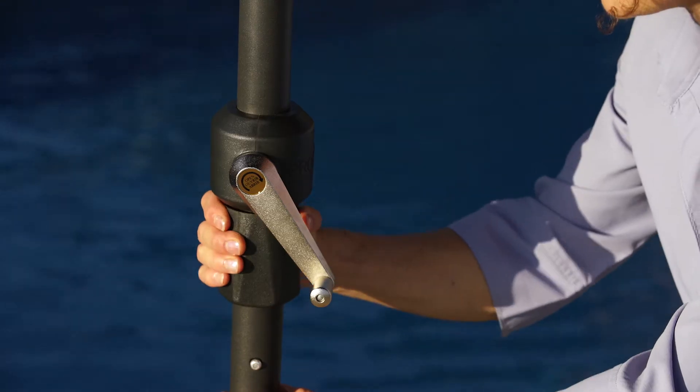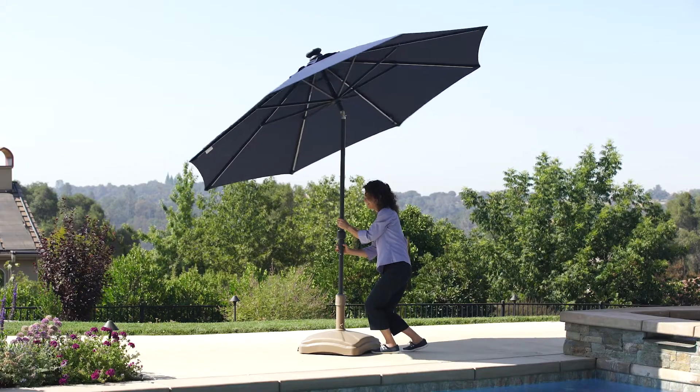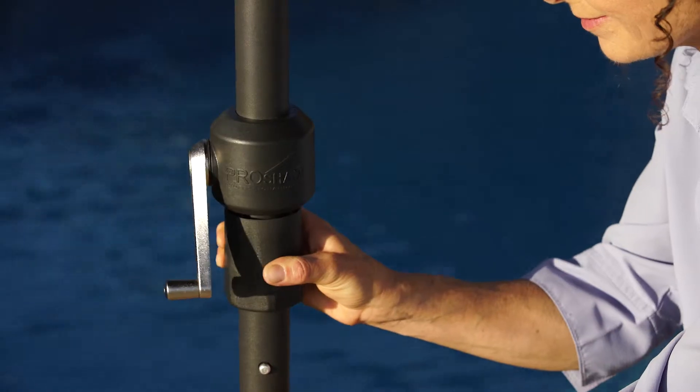To rotate the umbrella, pull down on the collar located below the crank handle and rotate to your desired position. Then release the collar to lock into place.